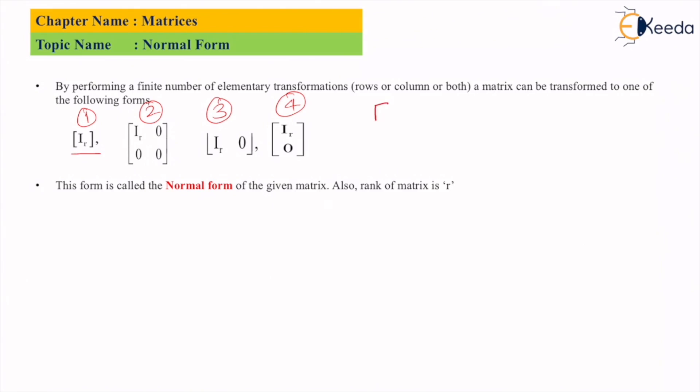For example, if I have a matrix of order three by three, this matrix can be represented as I_3. This is a normal form. The second form is I_r with zeros.